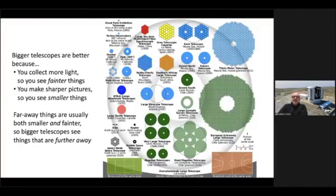This diagram shows pictures of the mirrors belonging to a whole different set of optical telescopes. Some of them from long ago, some built before 1900. And some of them are the big, giant ones I'll be talking about in this session. As I said before, bigger telescopes are better because, firstly, you collect more light, so you can see fainter things. Secondly, you can make sharper pictures with a bigger mirror, and so you can see smaller things. Since faraway things are generally both smaller and fainter, bigger telescopes are very helpful for seeing things that are further away.